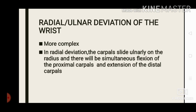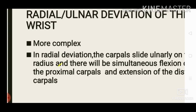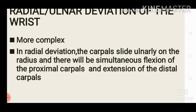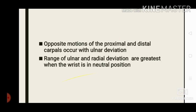Next, we move to radial and ulnar deviation of the wrist, which occurs around an anteroposterior axis and is more complex. In radial deviation, the carpals slide ulnarly on the radius, with simultaneous flexion of the proximal carpals and extension of the distal carpals — meaning the proximal carpals move forward and the distal carpals move backward. Opposite motions of proximal and distal carpals occur with ulnar deviation.